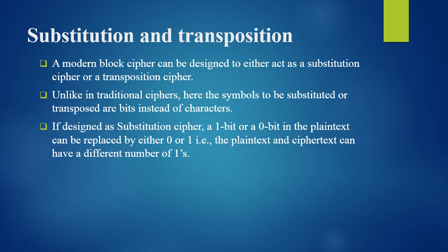For example, if our plaintext is 1, 0, our ciphertext can be 0, 0 — with 1 replaced by 0 and 0 replaced by 0. So we can say that the plaintext and ciphertext can have a different number of 1s.